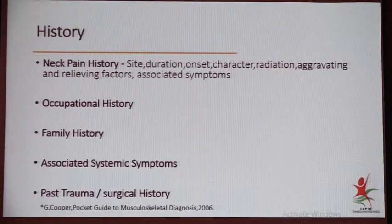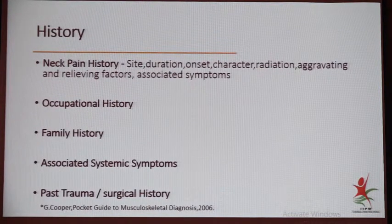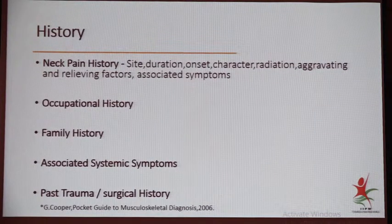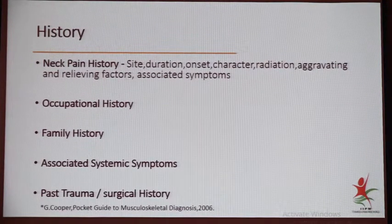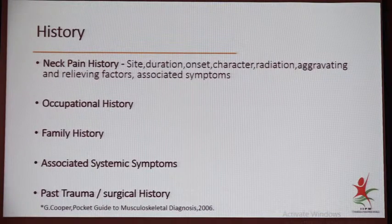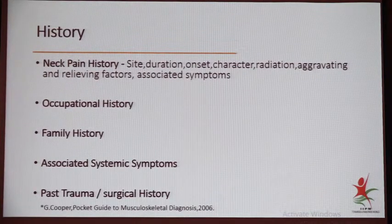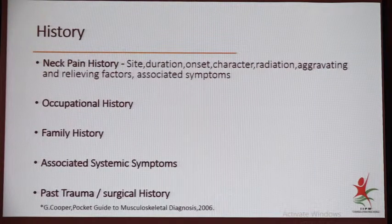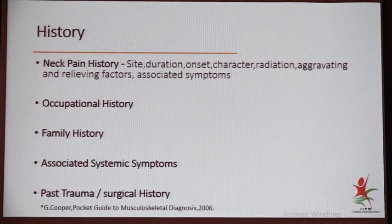For history, you have to note site, duration, onset, character, radiation, aggravating and relieving factors. How it started, whether it is gradual or rapidly started — if trauma, it is rapid; degenerative disease is a slow process. Occupational history helps in planning long-term pain relief and rehabilitation programs, especially when the patient has continuous flexion activities indicating muscle injury risk. Associated symptoms — also find out whether diabetes is present. Trauma and surgery are the greatest risk factors for developing neck pain. Family history — some arthritis runs in families — and fibromyalgia syndrome may also present as neck pain.